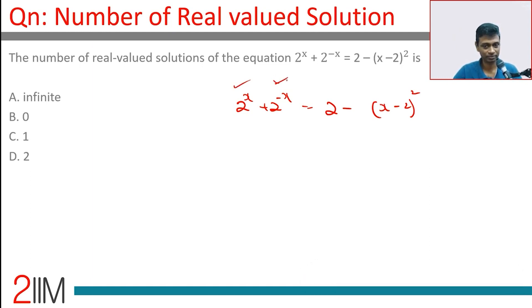The minimum value this can take - this is of the form y + 1/y - the minimum value it can take is greater than or equal to 2. If it were negative it would be less than or equal to -2. It is positive, so this side is greater than or equal to 2.